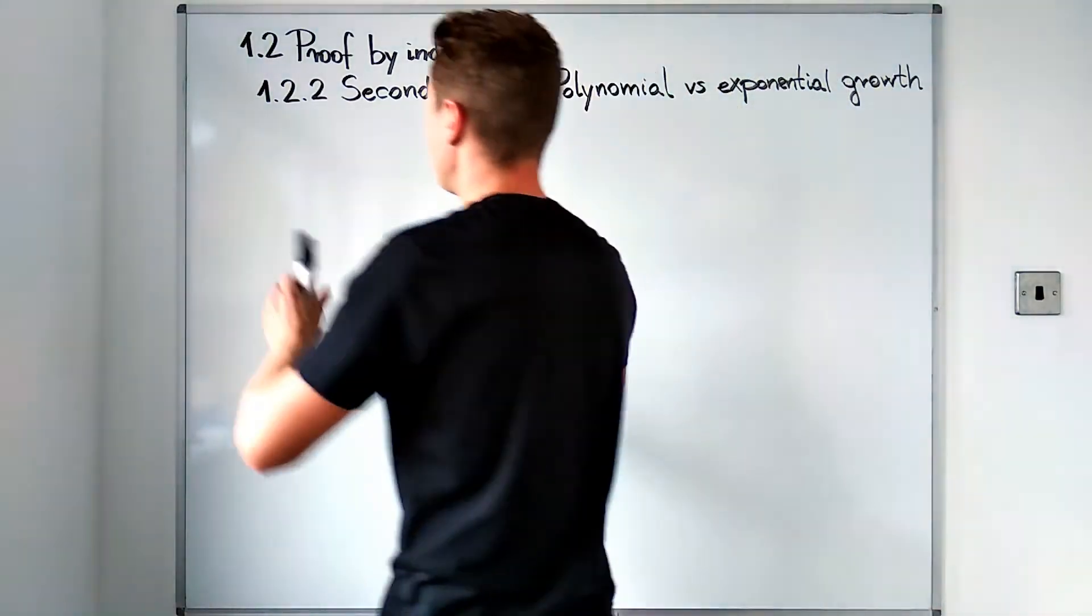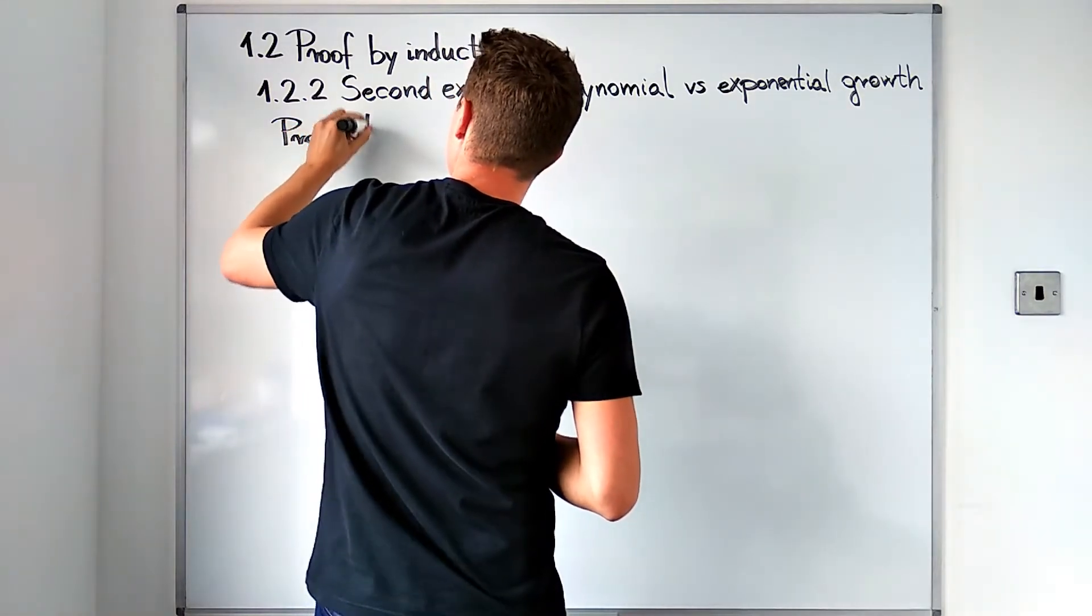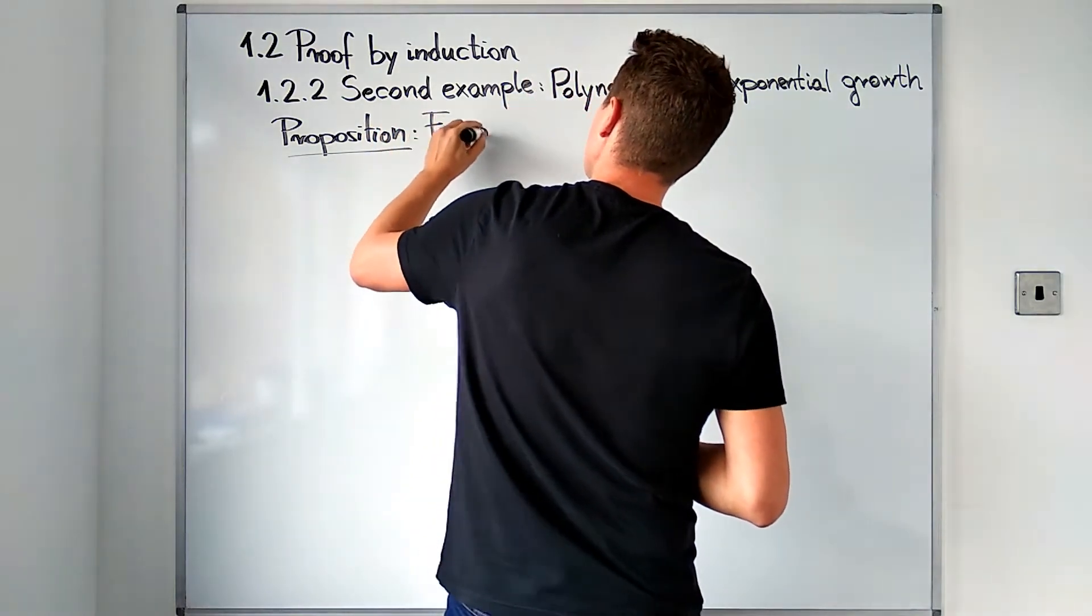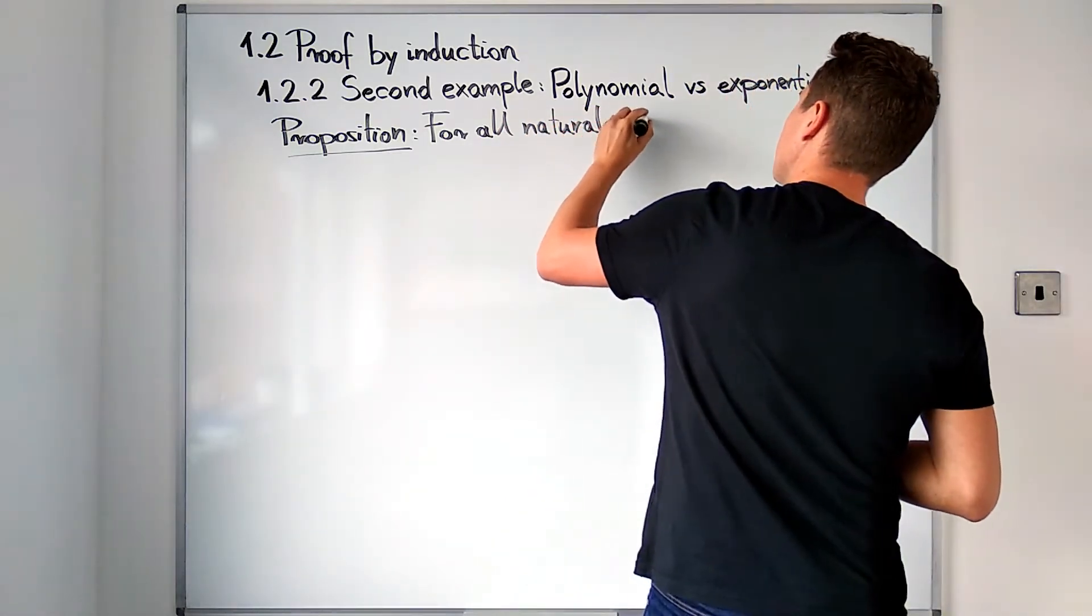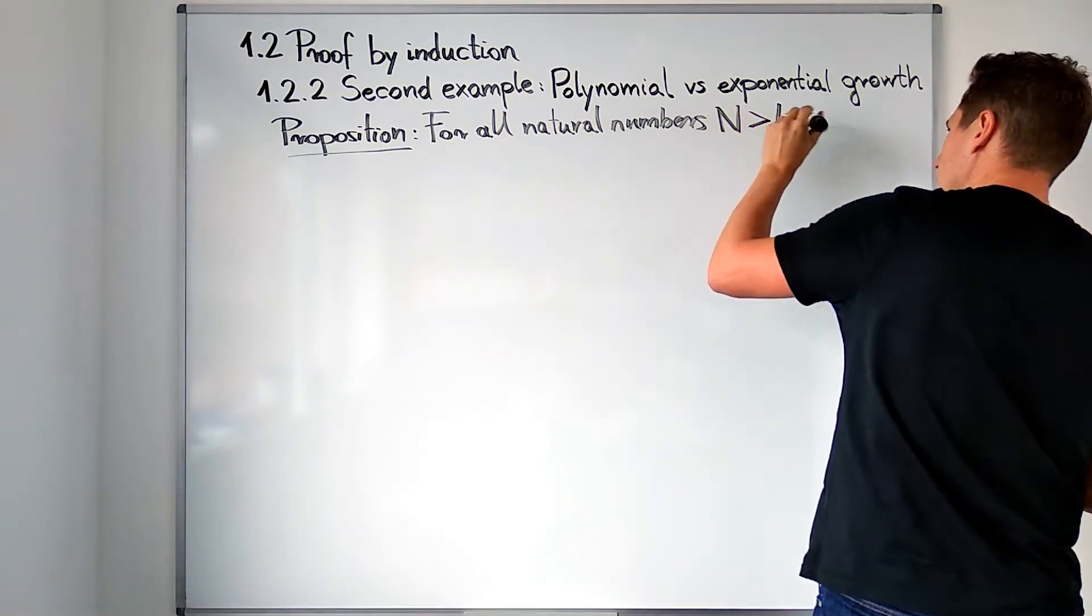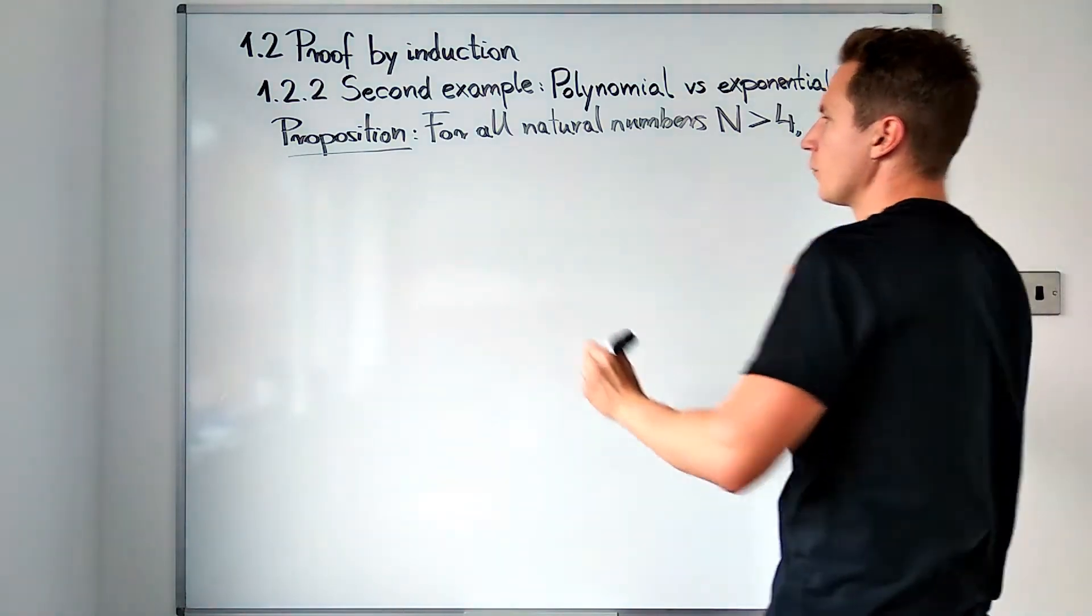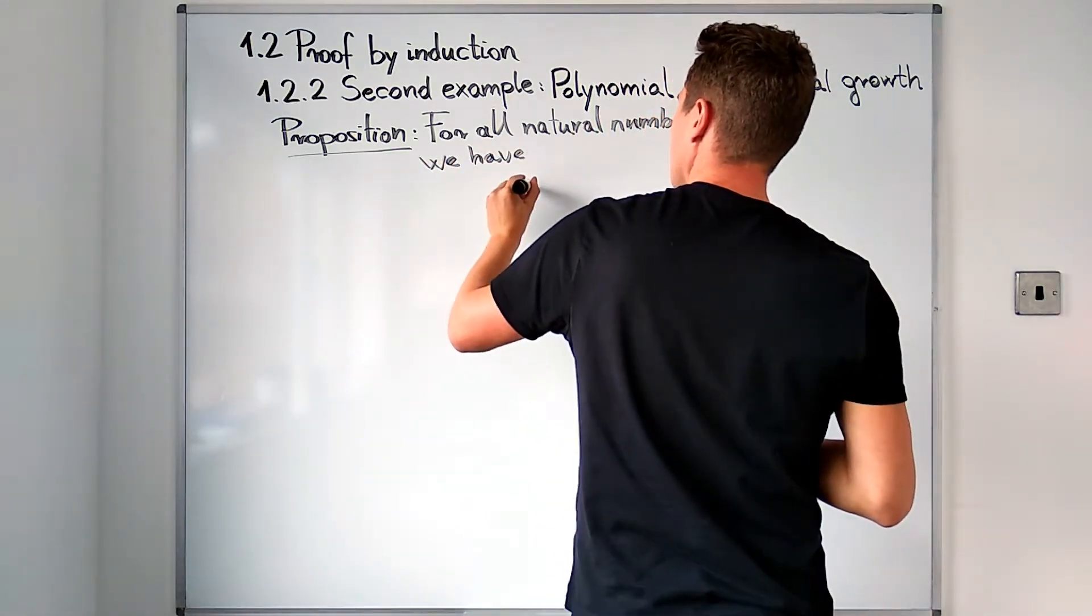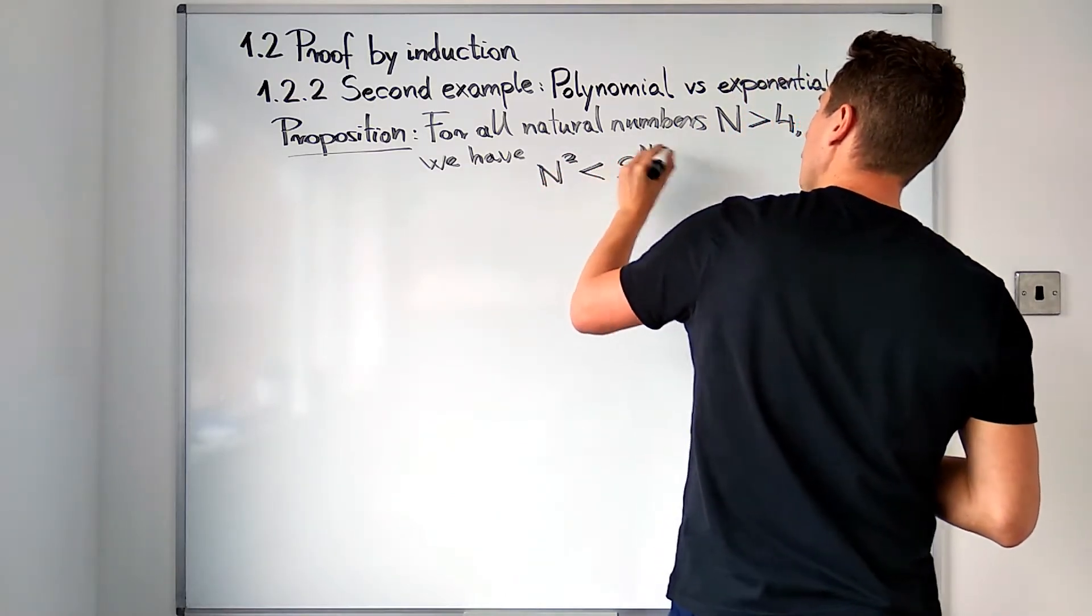Let me go right to the proposition, claiming that for all natural numbers capital N that are strictly greater than 4, we have the following inequality: n squared is going to be strictly less than 2 to the nth power.